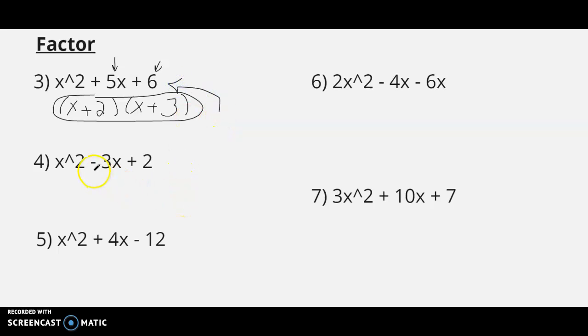Let's look at the next one, x squared minus 3x plus 2. Set up our answer, x and x, and the question is, what factors of 2 add up to negative 3? And those two numbers would be minus 1 and minus 2. Negative 1 times negative 2 is positive 2. Negative 1 plus negative 2 is a negative 3. So here's the factored form for example number 4.